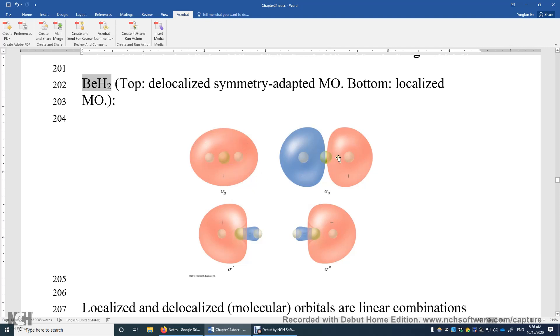So you see significant contribution from all three atoms. And the same here. However, in here, localized MO, you see this MO is localized between Beryllium and the hydrogen on the left. This one, between Beryllium and the hydrogen on the right.